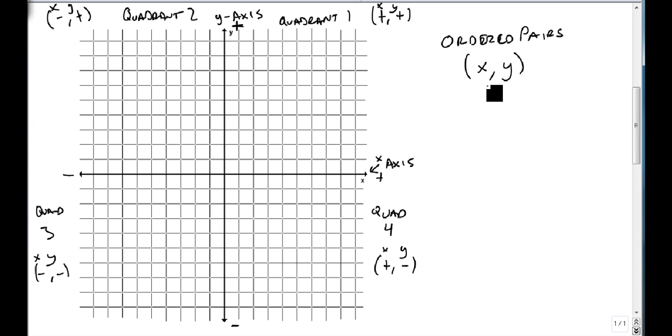One last thing to talk about is this guy right here, this point where the two axes meet. He is called the origin and has a value of (0, 0). 0 in x, 0 in y. He's right there at the center of our graph.